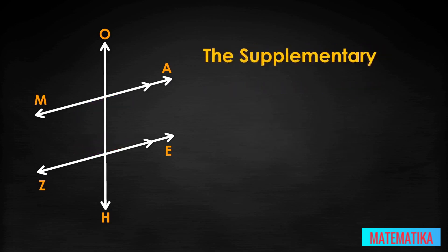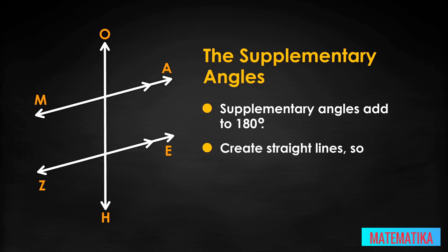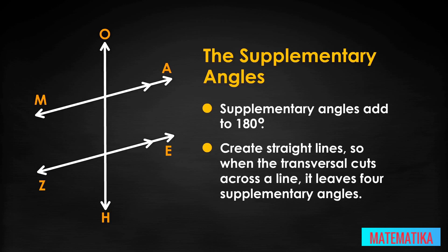What about supplementary angles? Supplementary angles add to 180 degrees and create straight lines. So, when the transversal cuts across a line, it leaves four supplementary angles. When a transversal cuts across lines suspected of being parallel, you might think it only creates eight supplementary angles because you doubled the number of lines — but not true, it creates 12.